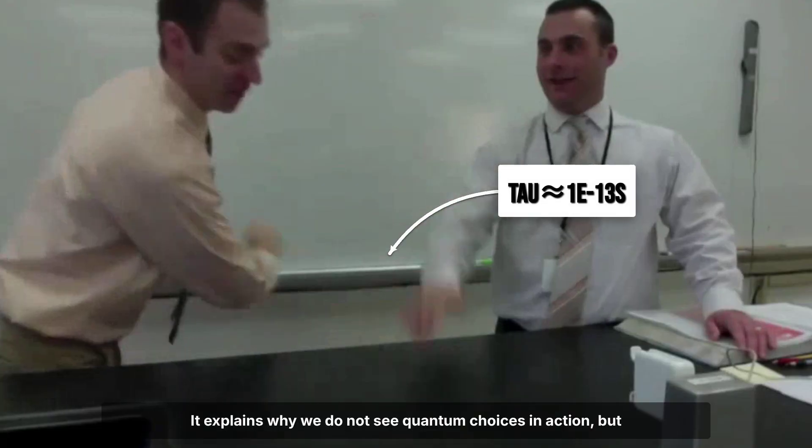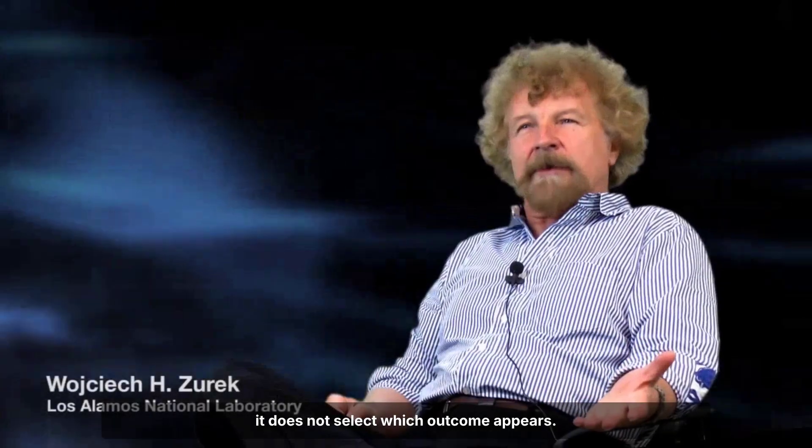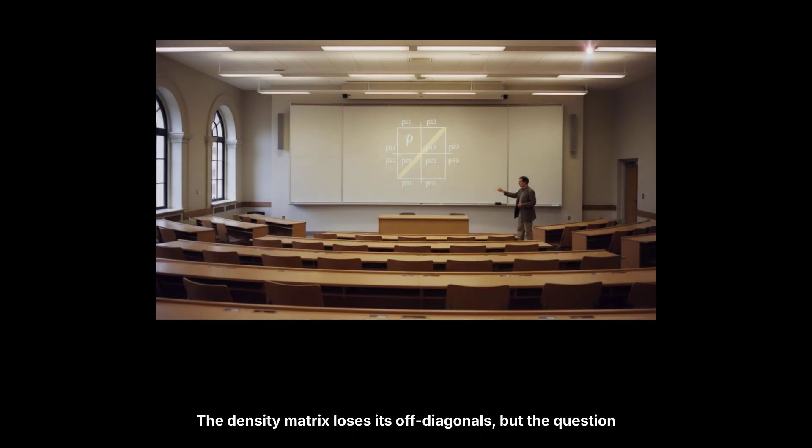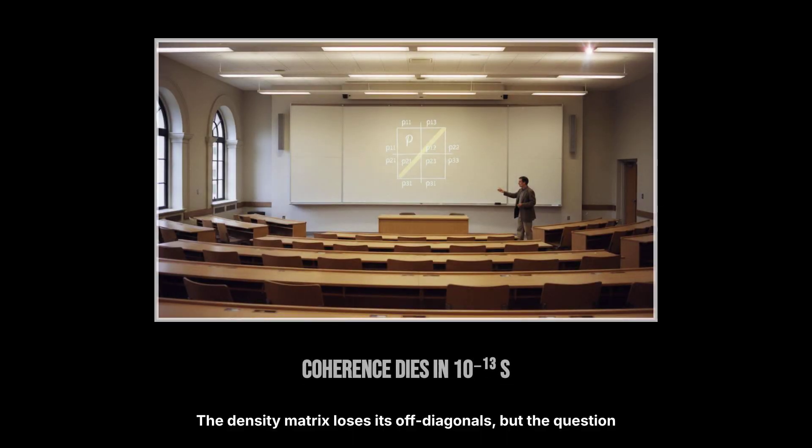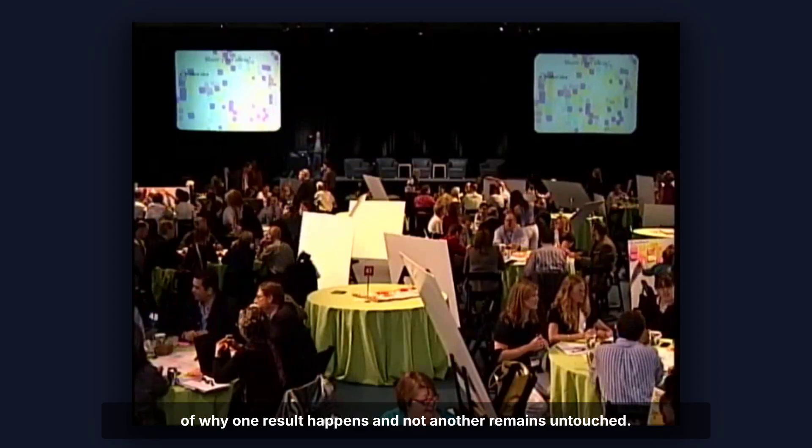The math says whatever else the mind may be, it is not a quantum computer running on long-lived superpositions. Decoherence suppresses interference, not outcomes. It explains why we do not see quantum choices in action, but it does not select which outcome appears. The density matrix loses its off-diagonals, but the question of why one result happens, and not another, remains untouched.